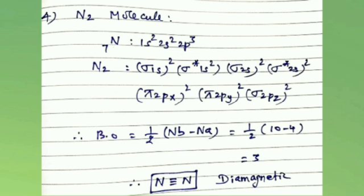Fourth one is the formation of N2 molecule. N2 is formed by N + N. Nitrogen has atomic number 7, therefore 1s2 2s2 2p3 configuration. The electronic configuration of N2 is: sigma 1s² sigma*1s² sigma 2s² sigma*2s² pi 2px² pi 2py² sigma 2pz². Bond order = 1/2 × (10 − 4) = 3. Therefore N≡N is a triple bond. N2 has no unpaired electrons, so it is diamagnetic.